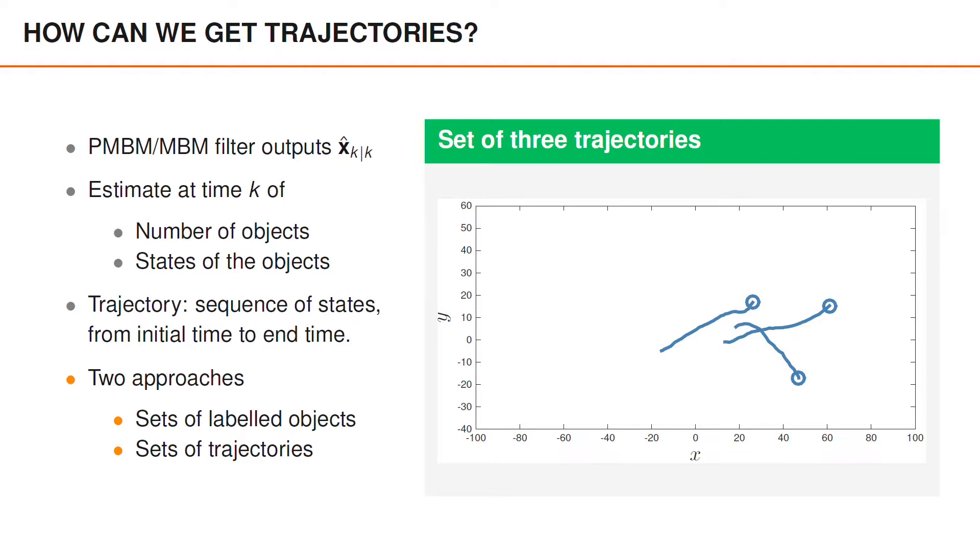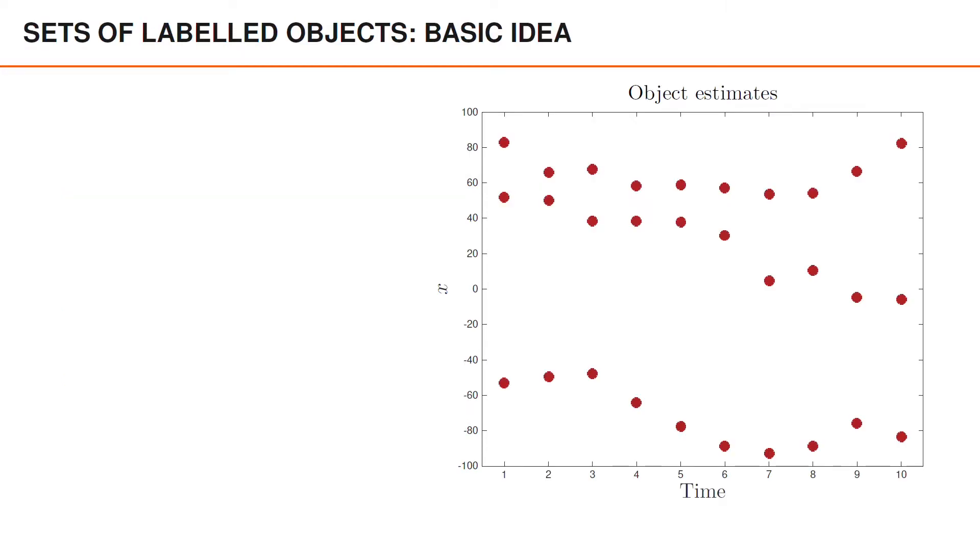We are going to begin with sets of labelled states, and we will return to sets of trajectories later. Consider the object estimates on the right here. We have ten discrete time steps on the x-axis and one-dimensional states on the y-axis. The output from the tracking filter are sets of object estimates at each time step, illustrated by the red circles.